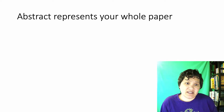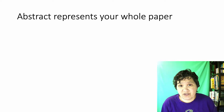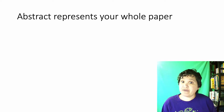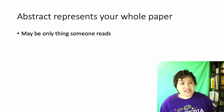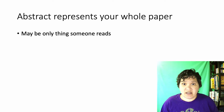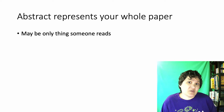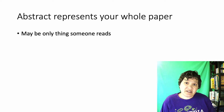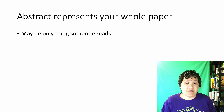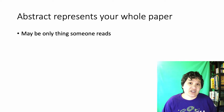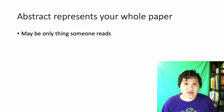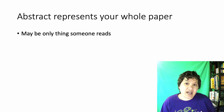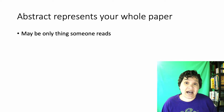The whole point of an abstract is to represent your whole paper — to sum it up in a relatively brief paragraph. The reason we do this is because this may be the only thing someone reads in regards to your paper. When you're doing a literature search, you see a paper that looks good based on the title, you click on it and read the abstract. The abstract is what helps you decide whether you want to go through and read the entire paper or not. So it's very important to have your abstract represent your entire paper.